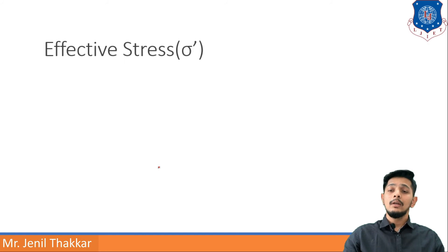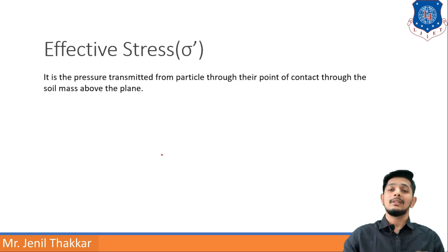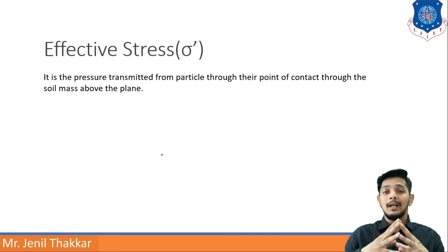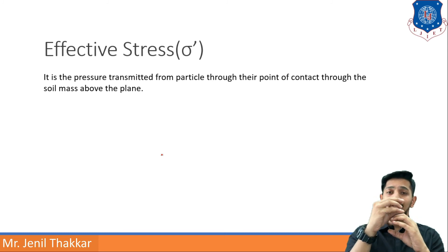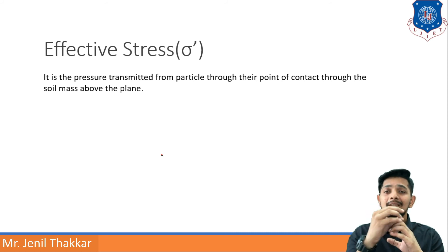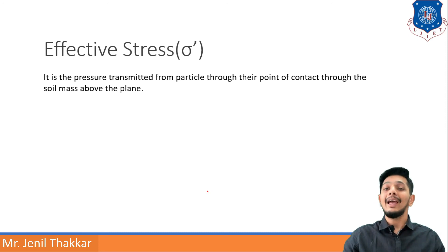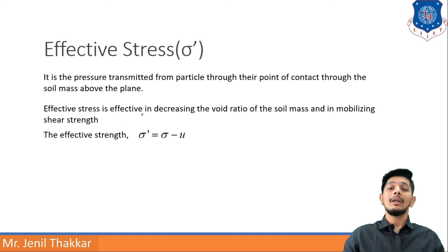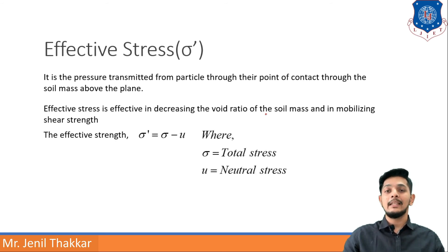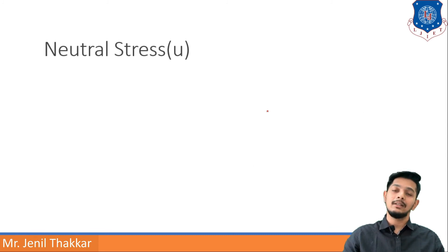Effective stress, sigma-dash, is the pressure transmitted from particles through their points of contact through the soil mass above a plane. It is effective in decreasing the void ratio of the soil mass and in mobilizing shear strength. Effective stress can be written as: sigma-dash equals sigma minus u, where sigma is total stress and u is neutral stress.